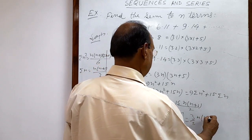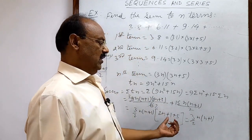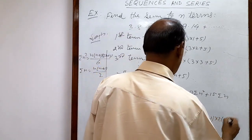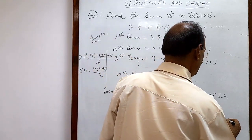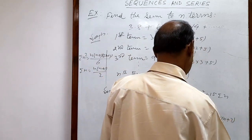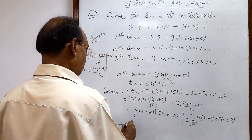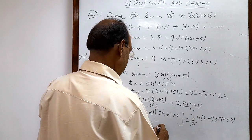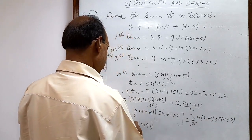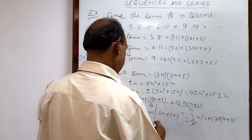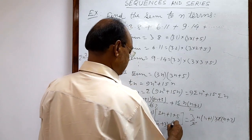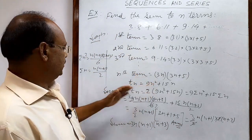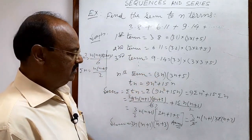From (2n+6) we take out 2 as common, giving 2(n+3). The 2 cancels with the 2 in the denominator. Therefore the required sum is 3 · n(n+1)(n+3). This is the final answer — a simple and interesting solution using the standard formulas.